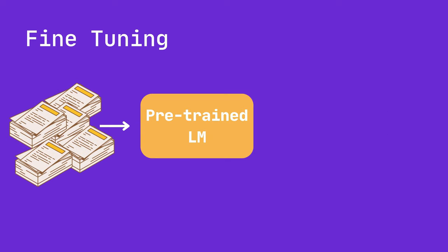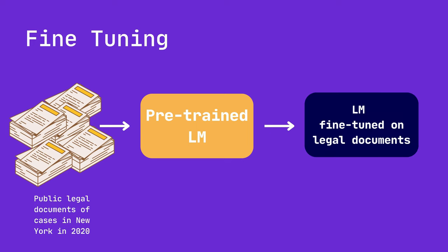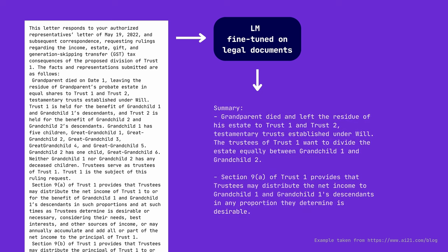Another common use of fine-tuning is to adapt a pre-trained model to technical or specialized knowledge domains, such as the medical or legal fields. For example, a pre-trained language model could be fine-tuned on a collection of legal documents to achieve tasks like understanding and summarization of legal agreements. By doing so, the model becomes proficient in handling the unique vocabulary, syntax, and stylistic conventions prevalent in that specific domain.